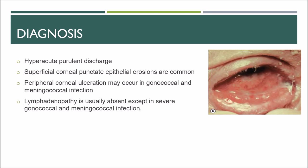Hyperacute purulent discharge is significant of gonococcal or meningococcal conjunctivitis, as seen in the figure. Superficial punctate epithelial erosions on the cornea are common. Peripheral corneal ulceration may occur in gonococcal and meningococcal infections and may rapidly progress to perforation.